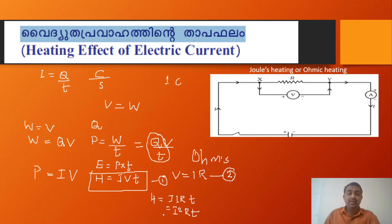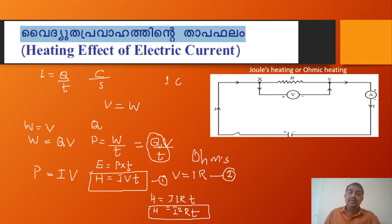There is resistance in the Nichrome wire. The equation is H equals I²Rt. This is a very unique equation. The heat coming from the Nichrome wire — this is a process that converts electrical energy into heat energy.